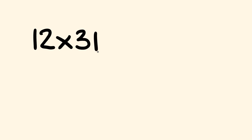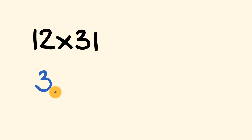The first method is called rainbow multiplication. To get the hundreds part of our answer, we multiply the two tens digits: 1 multiplied by 3 equals 3. Because they're both tens digits, this is equivalent to 300, so we write 3 with two spaces afterwards.